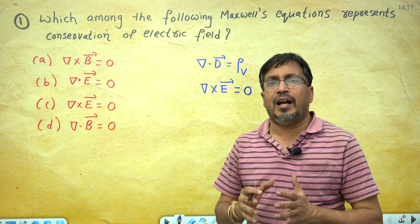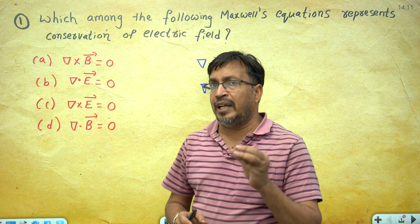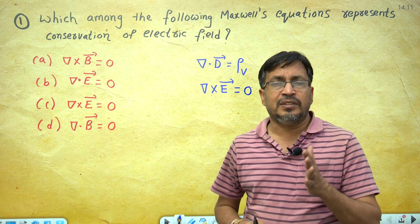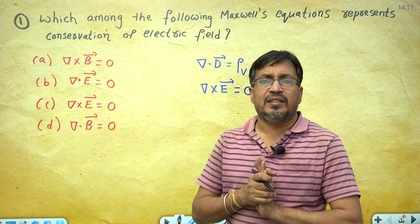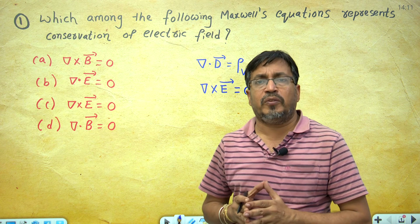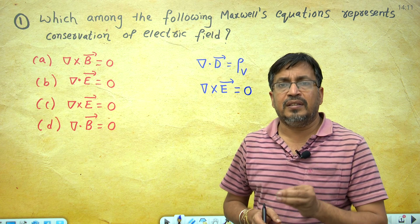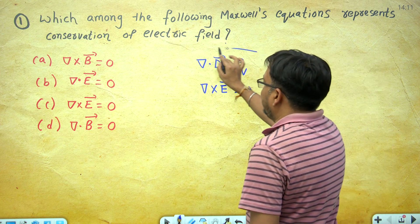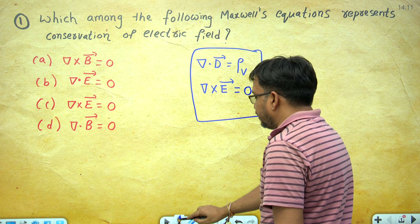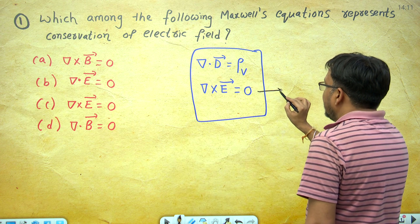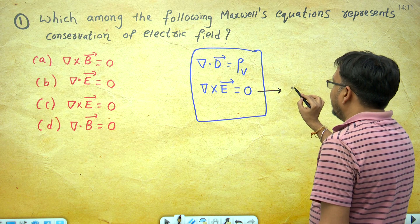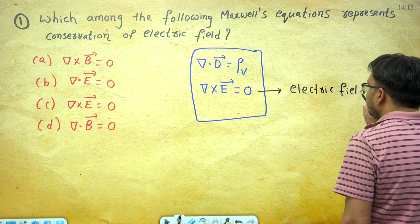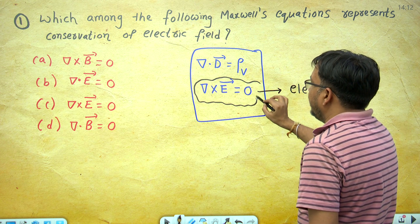When the resultant of divergence is 0, we consider the vector field to be solenoidal. One more important point: when the resultant of curl is 0, then the corresponding vector field is conservative. So we have two Maxwell's equations — divergence of D equals rho_V, and curl E equals 0. When the resultant of curl is 0, that electric field component is irrotational, which is also known as conservative.